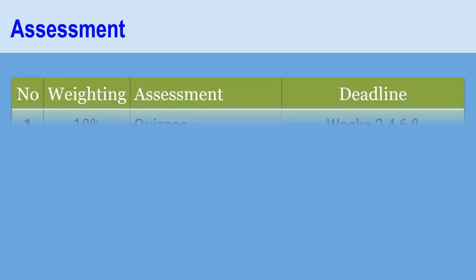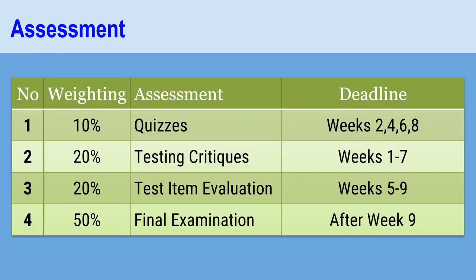Now, assessment of the course. During the course, students need to demonstrate evidence that they have read and talked about the course materials and are willing to share their understanding and questions with their colleagues. Students are assessed for their performance in four pieces of assignment: namely the quizzes, the testing critics, testing item design and evaluation, and the final examination. All the details of these assignments and examination are provided in the course outline.